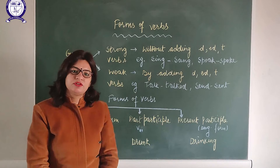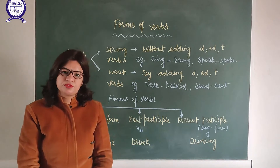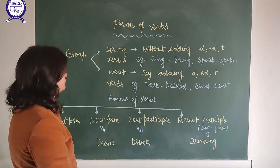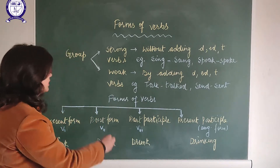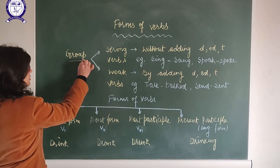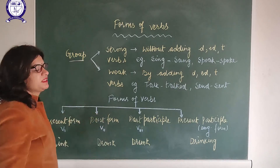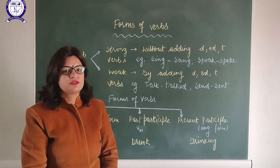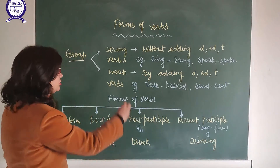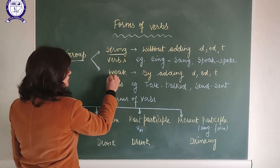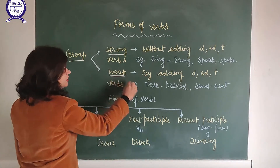The next topic in the verb is the forms of the verb. First of all we will understand the groups of the verb. Verbs are basically classified into two groups: the first is the strong verbs and the second one is the weak verbs.